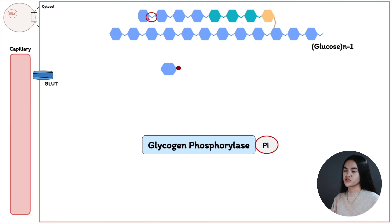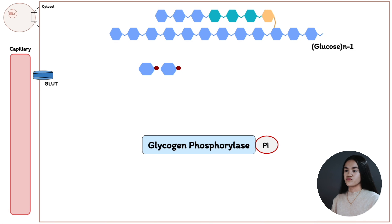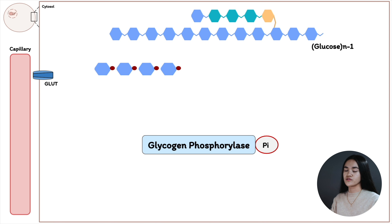Glycogen phosphorylase throws the phosphate between two glucose units, breaking the bond. The glucose catches that phosphate at its first carbon — think of glucose as having six hands, one per carbon — and is turned into glucose-1-phosphate. The glycogen is then shortened by one residue. Glycogen phosphorylase keeps breaking these alpha 1-4 linkages until it reaches four glucose residues away from an alpha 1-6 linkage, and then it stops.